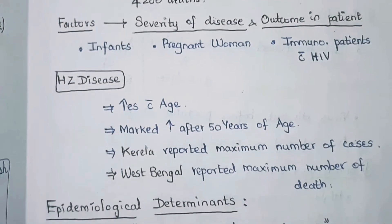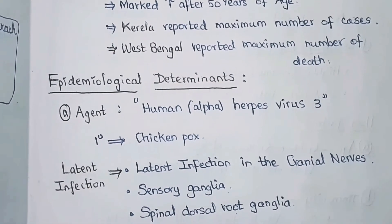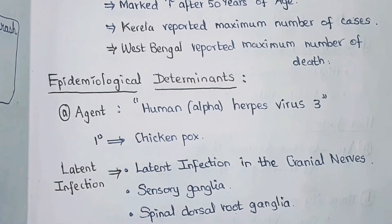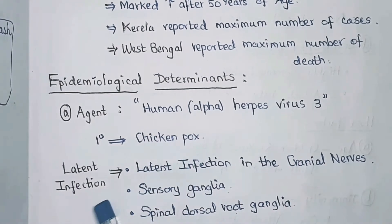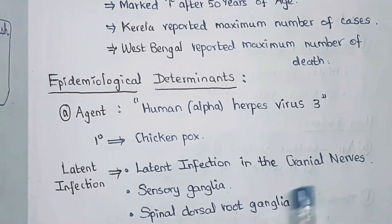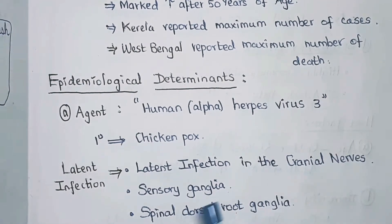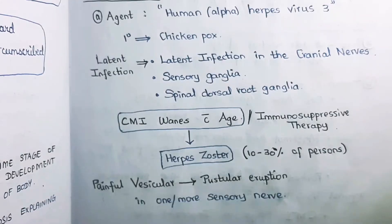Regarding epidemiological factors: the agent, varicella zoster virus, comes under the family of human herpes virus 3, that is human alpha herpes virus 3. It primarily causes chickenpox. The latent infection mainly stays in the cranial nerves, sensory ganglion, and spinal dorsal root ganglion.